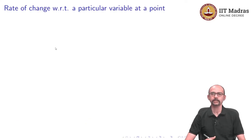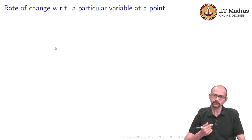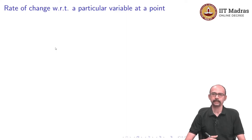Let us talk about the rate of change with respect to a particular variable at a point. Suppose we have a function f(x₁, x₂, …, xₙ) and we want to ask how this function behaves at some fixed point ã when x₁ varies. We keep everything else fixed, just vary x₁, and ask how the function changes — does it change fast or slowly? This is analogous to asking what the instantaneous speed is as you change x₁. We can do this with any particular variable.